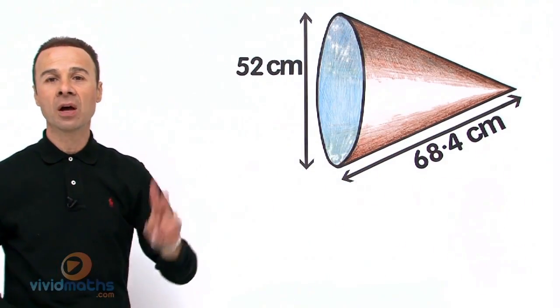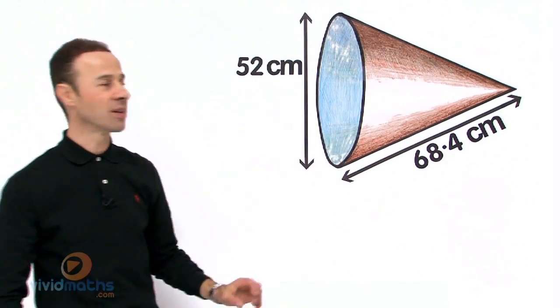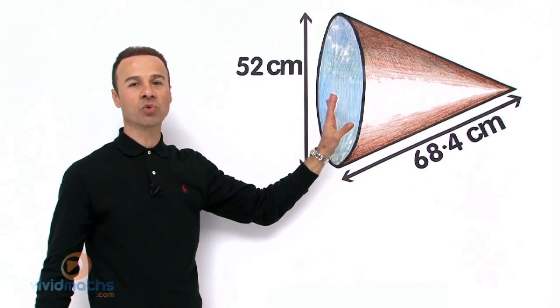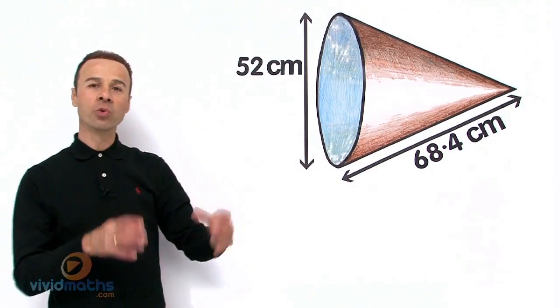Now this cone consists of two components, two parts, and that is the curved surface here and the circle area at the base right over here. And the formula will reflect that.